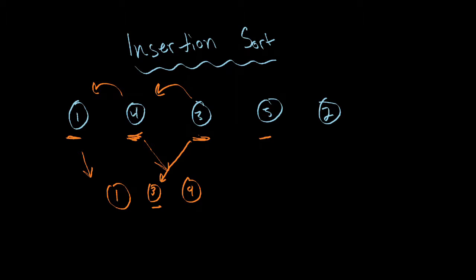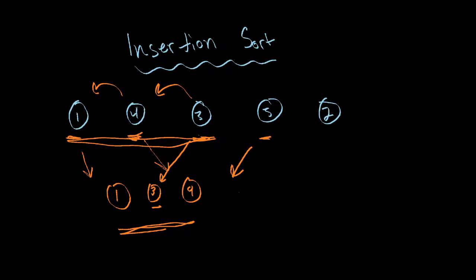Then to the next one: five. We're going to compare that to all the ones that come before it. Five is greater than three, five is greater than four, and five is greater than one. And so what we're really doing here — we're not comparing to the original data set anymore. We can just compare it to this sorted data set. So now if we know that five is not less than four, that's as far as we have to look, and we just insert it here.